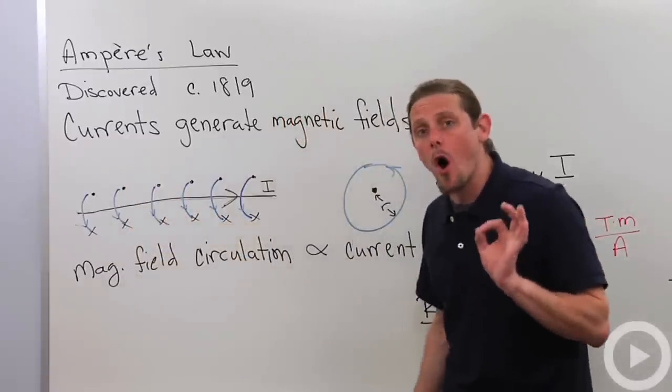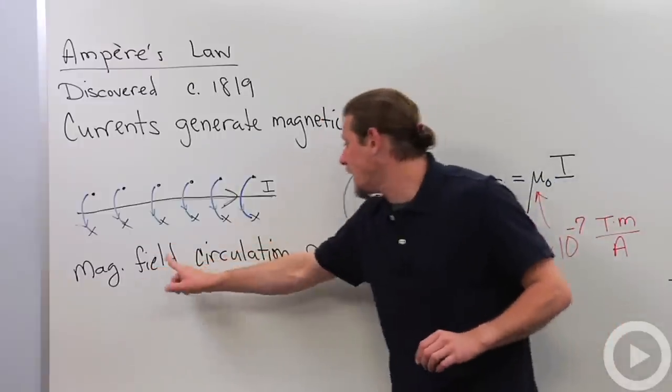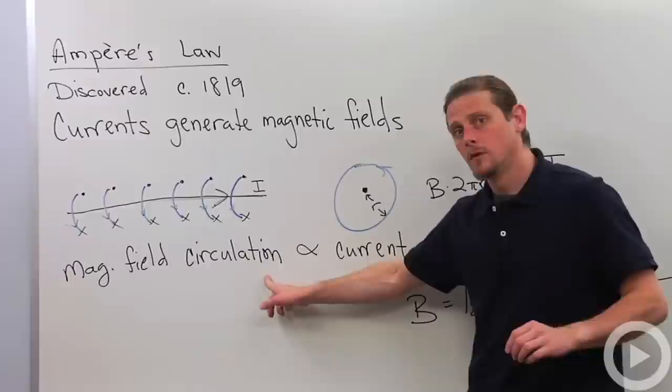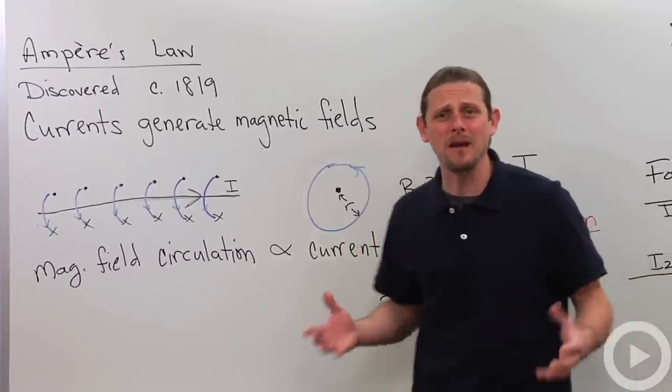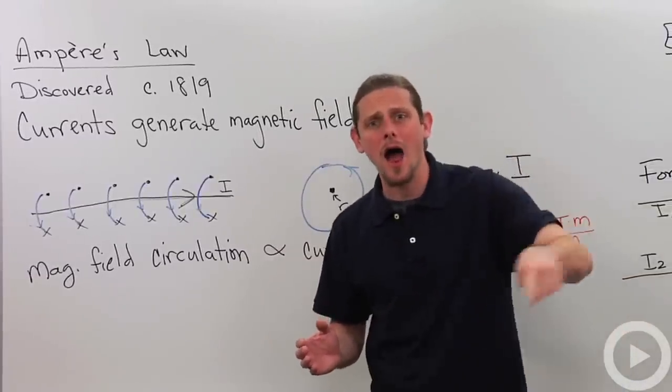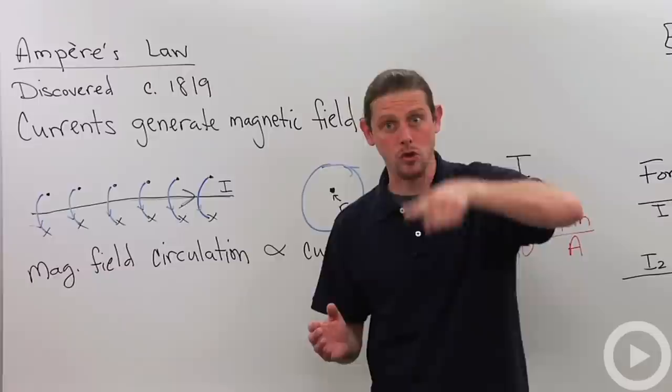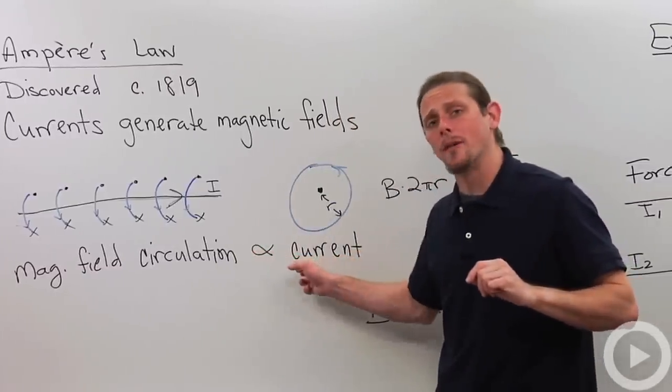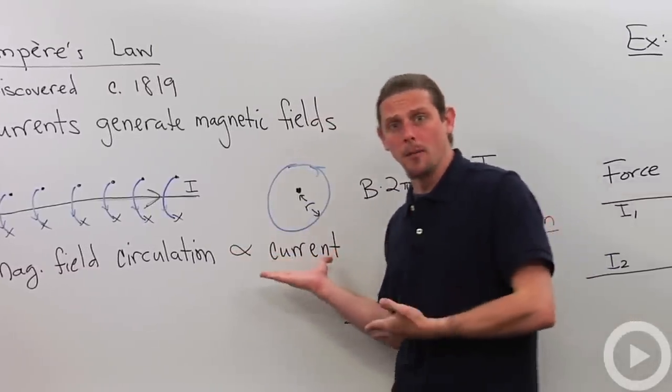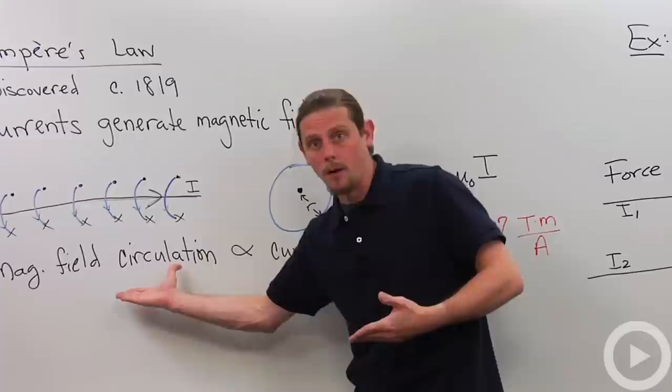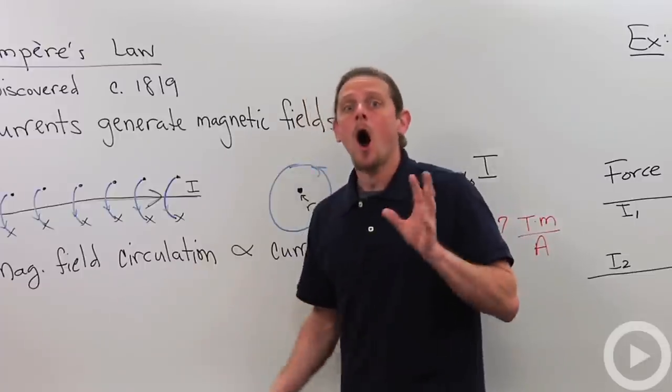Now what Ampere's law also says is that the magnetic field circulation, and by that we basically mean the magnetic field times the length of that circulation, is proportional to how much current we've got. So if we double the amount of current, then we're going to double the size of the magnetic field.